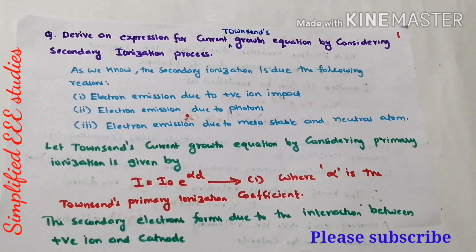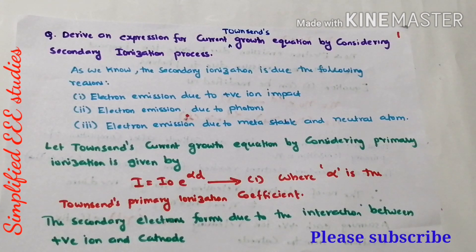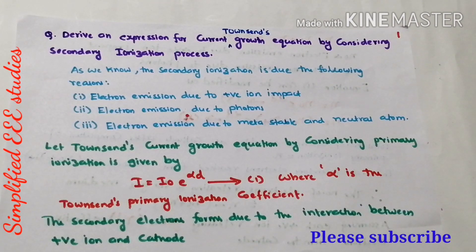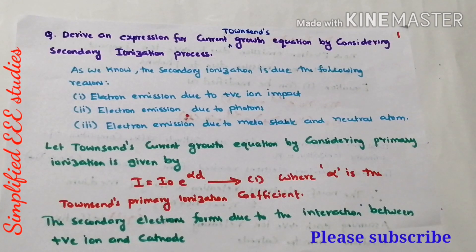Dear all, on November 24th I published a video on the derivation of Townsend's current growth equation by considering the secondary ionization process. I watched the video once again and could notice that the last part could not be published in a proper manner due to some technical issues. I regret for the inconvenience. To overcome those issues, I am going to re-derive the expression for Townsend's current growth equation by considering the secondary ionization process once again.